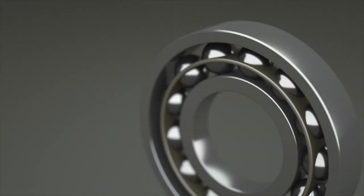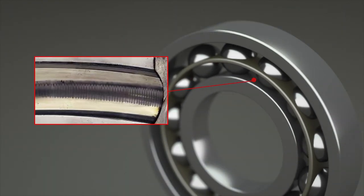If a bearing is experiencing fluting, the inner ring will likely have washboard-like ridges where the electrical current is wearing it down.